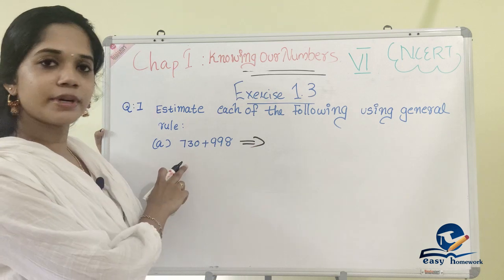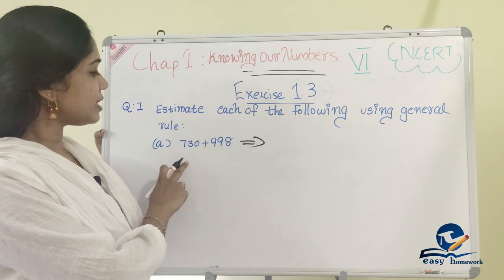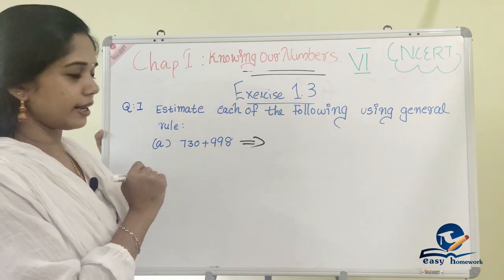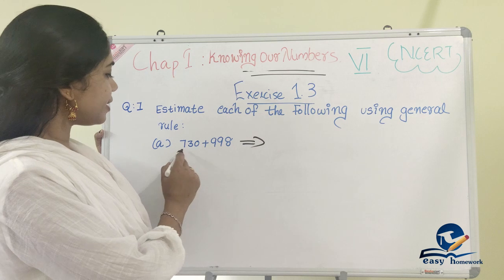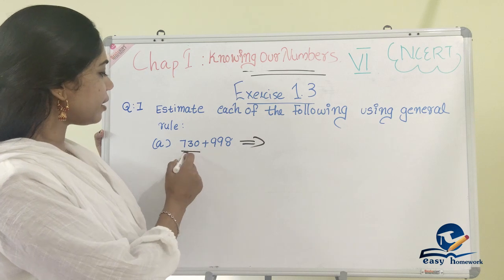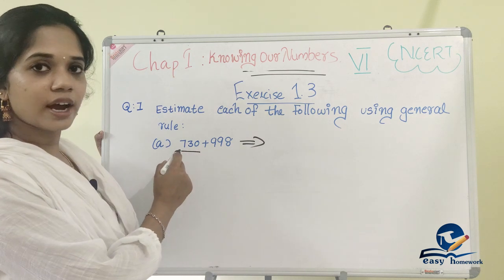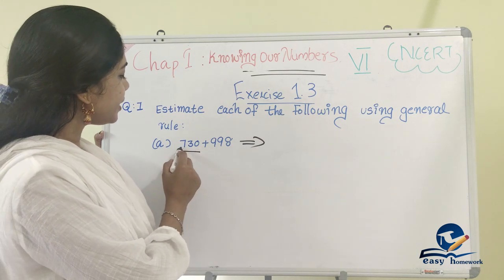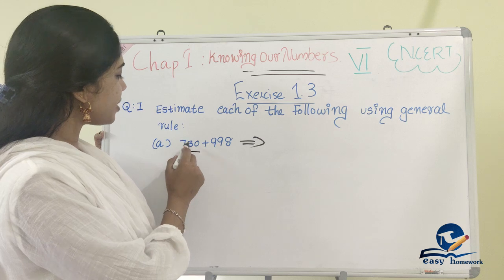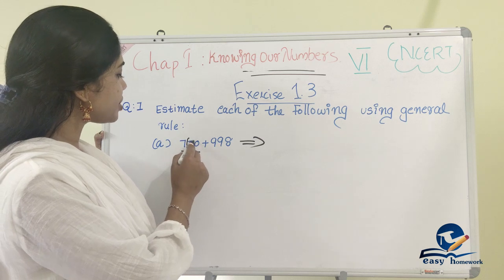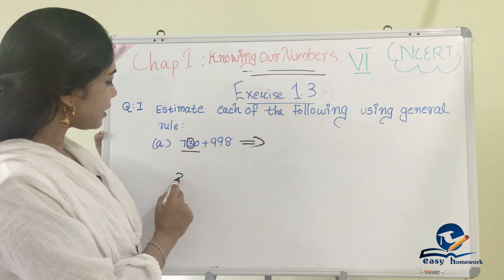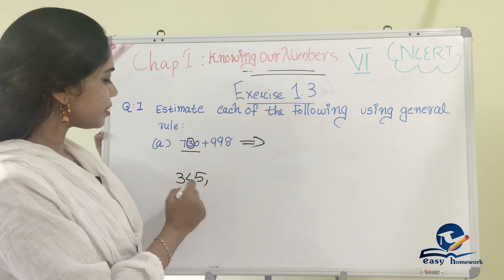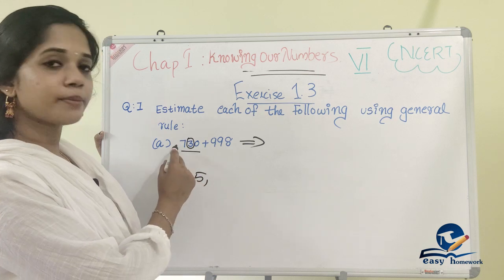We will show the numbers here. We will add 730 plus 998. We will do the nearest 100. In the 100 position, we will look at 7. In the tens position, we will look at 3. Since 3 is less than 5, we keep 7 as is.